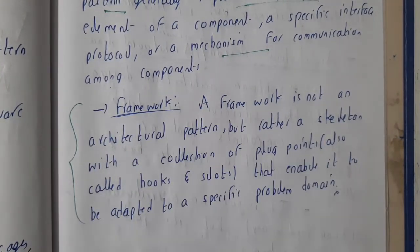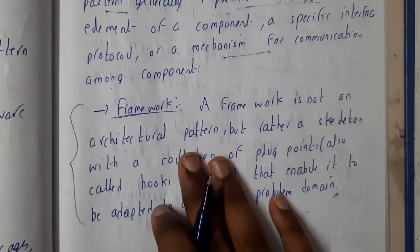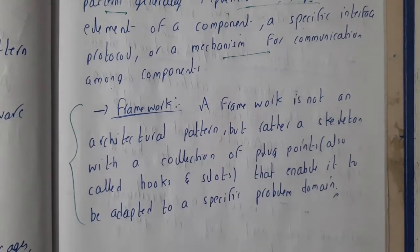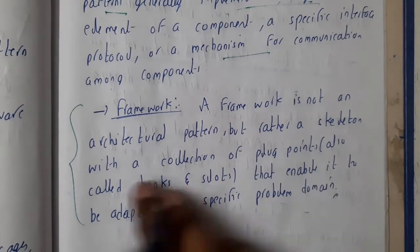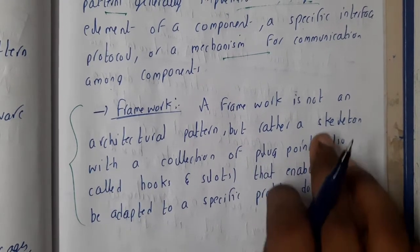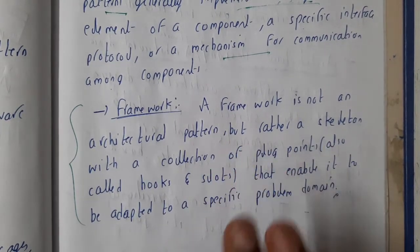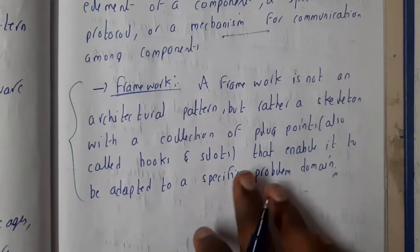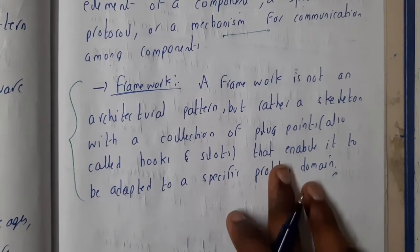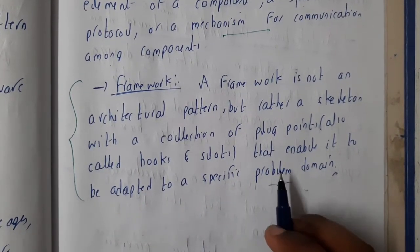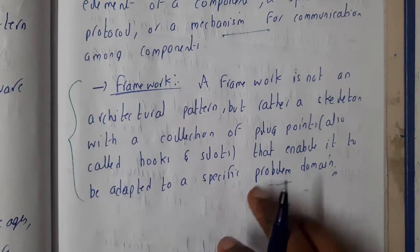A framework is not an actual architecture — it is just a skeleton, but rather a skeleton with a collection of plug points where you can connect or hook anything you want. These are also called hooks and slots, and they enable it to adapt to any specific problem domain.